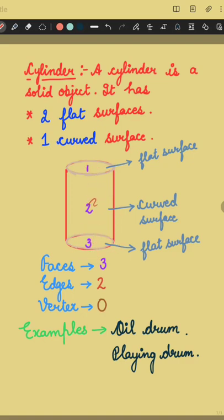Both these parts are circular, and these are the edges. It has no vertex, or we can say it has zero vertices. Examples are oil drum and playing drum.